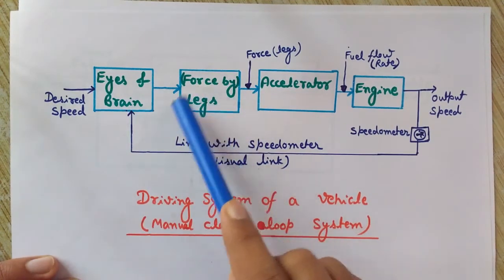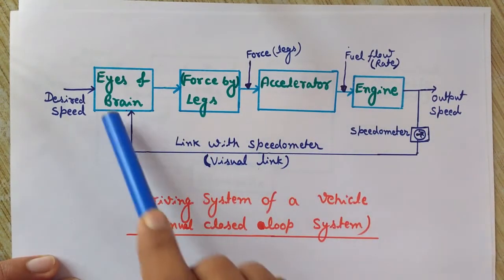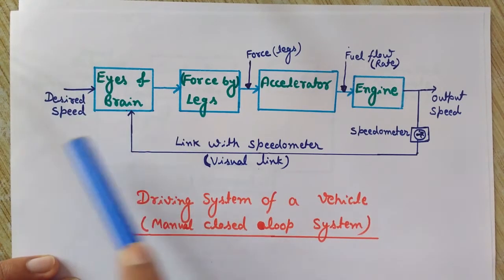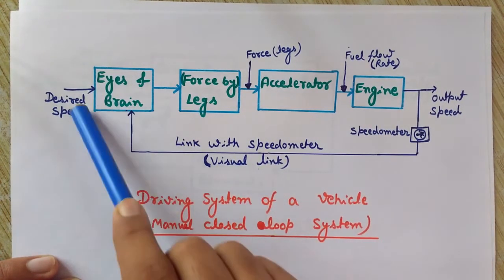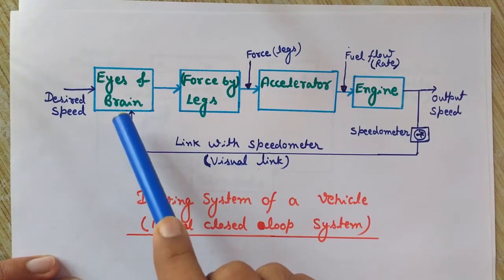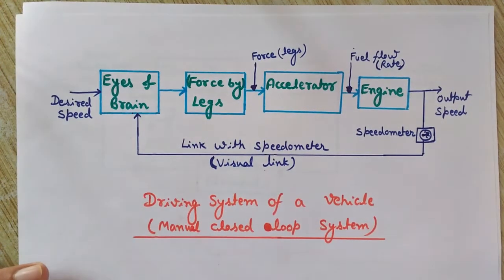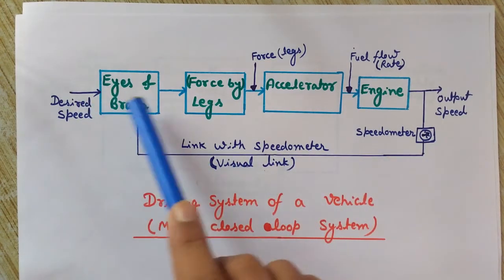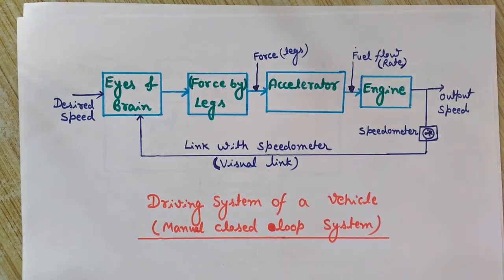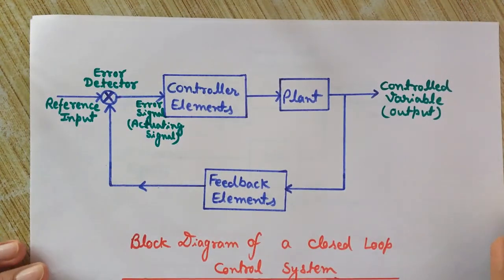The driver varies the force by his legs on the accelerator to achieve the desired speed. We get the difference between the desired speed and the speed at the output. This difference can be used to control the speed of the vehicle. This is an example of a closed loop system where we get the output, observe it, and vary it as per the desired speed.